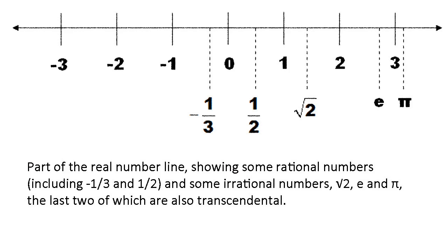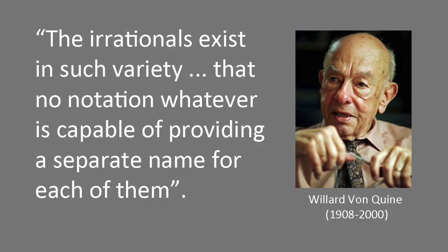An uncountable set is one that can't be put in one-to-one correspondence with a set of natural numbers. The Harvard logician Willard van Orman Quine put it this way: The irrationals exist in such variety that no notation whatever is capable of providing a separate name for each of them.